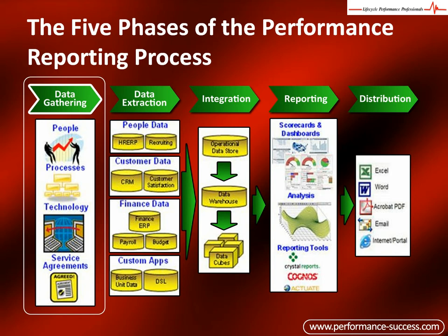Number five: the data gathered should be a reasonable representation of the whole process. For example, it would not be a good idea to gather data over a bank holiday or only on Monday night shift. Number six: don't reinvent the wheel — if the data you require already exists in an accurate, usable format, all you need to do is map to it. If it doesn't, you will need to design a method of gathering that data.